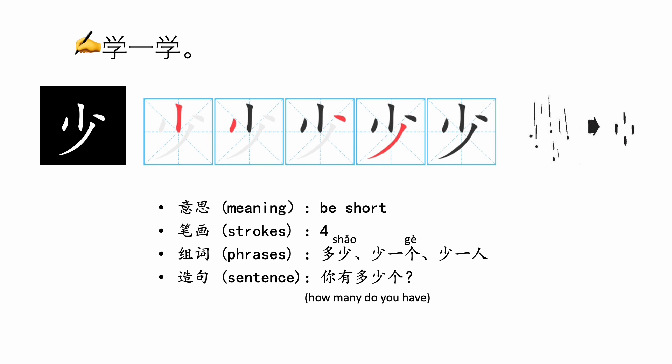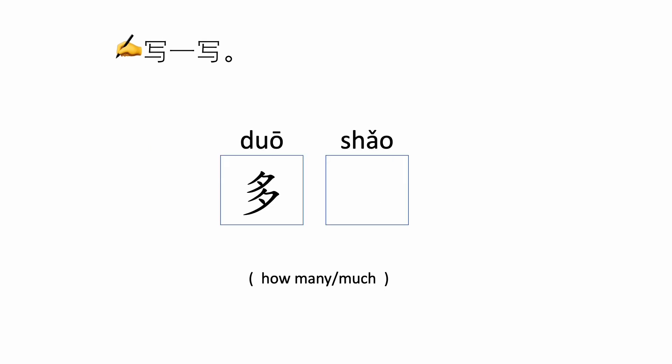少 looks like a bunch of dots — it has four strokes: 数, 撇, 点, 撇. It can form the phrases 多少 (how many), 少一个 (one less), 少一个人 (one person less), and the sentence 你有多少个 (how many do you have?). 多少 means how many or how much.